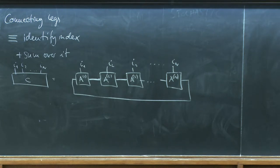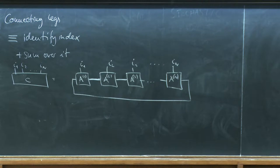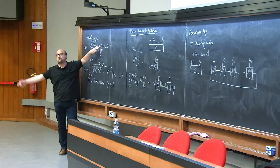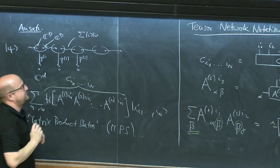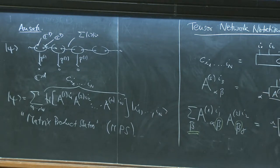Before discussing calculations, let me highlight that MPS are actually a very well-suited class of states for the systems we want to describe. Given a state that doesn't have too much entanglement — such as a ground state of a local Hamiltonian — can we approximate it efficiently by matrix product states? The first observation is that in principle, every state can be described in this form.